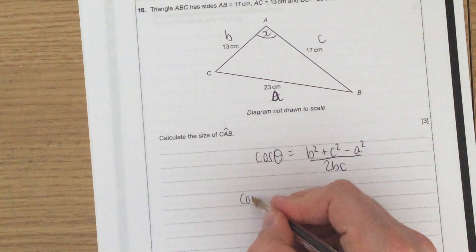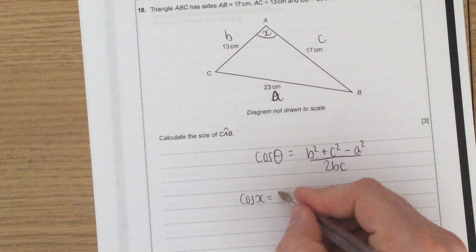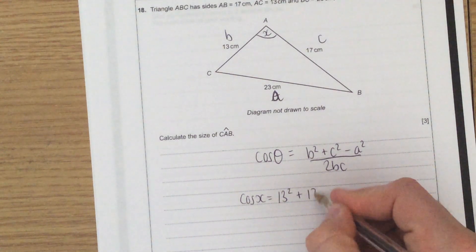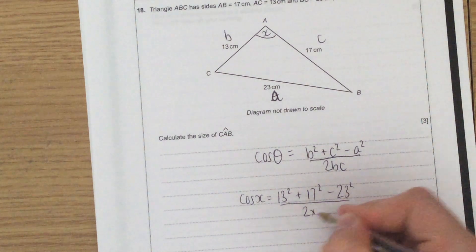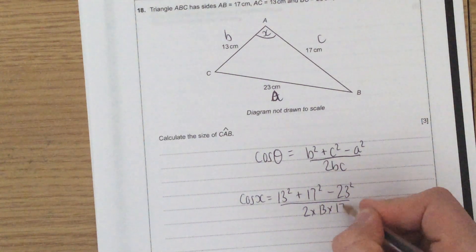So in this case, I end up with cos x equals b squared plus c squared minus a squared, all divided by 2 times b times c.